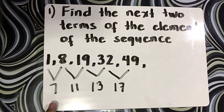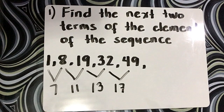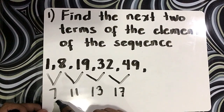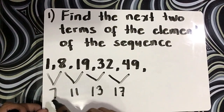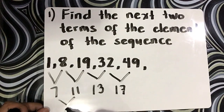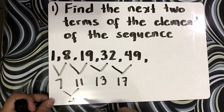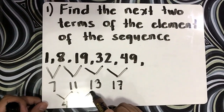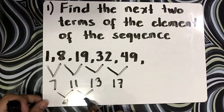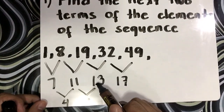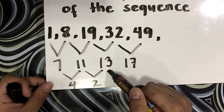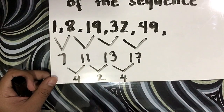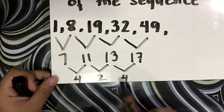You notice here we can get another common difference. 11 minus 7 gives you 4; 13 minus 11 is 2; 17 minus 13 is 4. So we have now a pattern: 4, 2, 4.